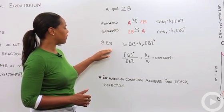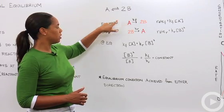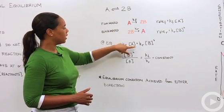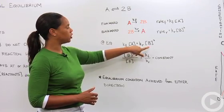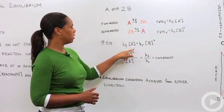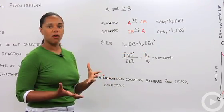At equilibrium the definition of equilibrium is that the forward reaction so the rate with which two B is formed is equal to the rate with which A is formed so the forward reaction is equal to the backwards reaction.